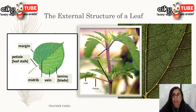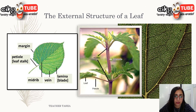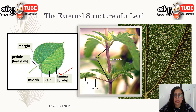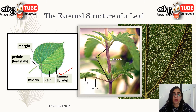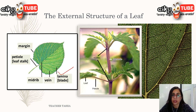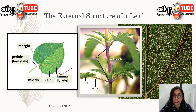The external structure commonly consists of lamina and petiole. The lamina is the leaf blade — it is broad, thin, smooth, and the green part of the leaf. Lamina is usually flat in shape. It provides a wide surface area for cells containing chloroplasts to achieve maximum absorption of sunlight for photosynthesis.